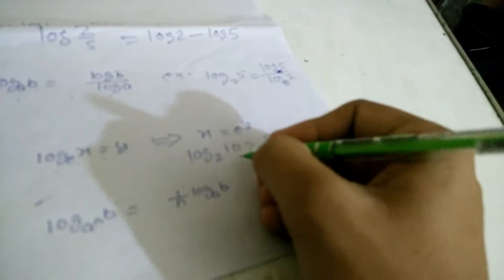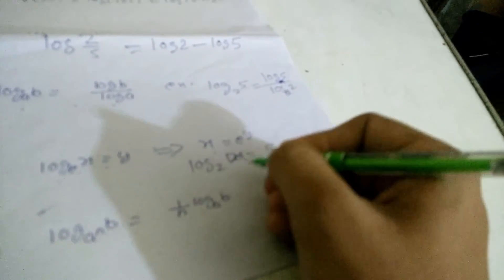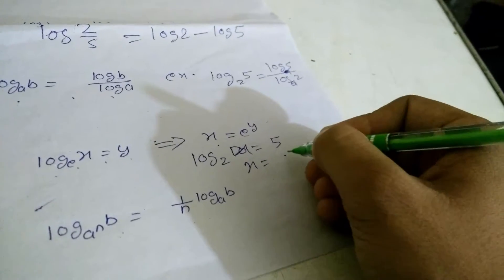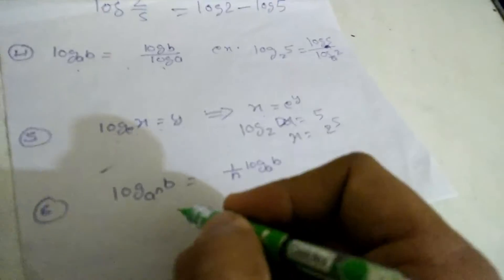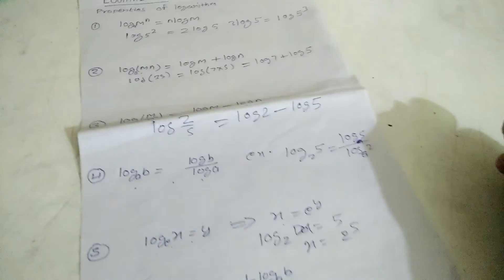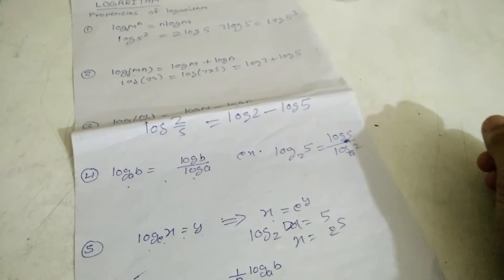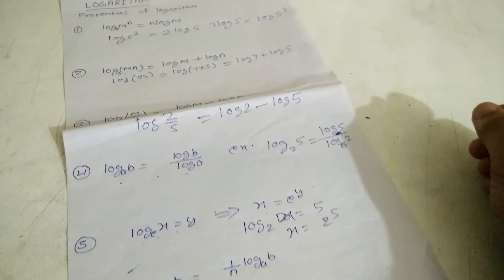If you have log base 2 of 10 is equal to 5, then we can write 10 is equal to 2 raised to the power 5. This is a very important property. In our next lecture we will discuss another properties.